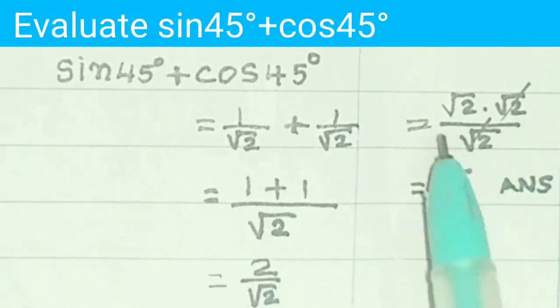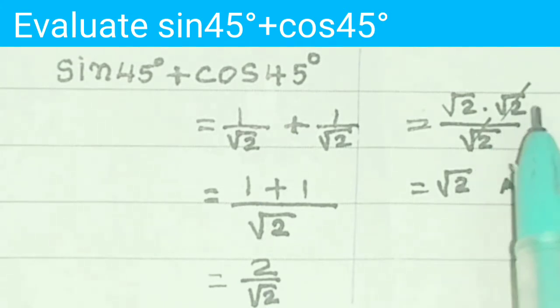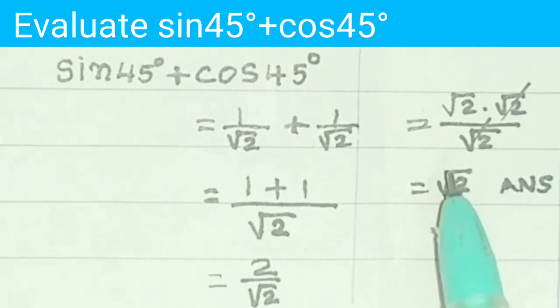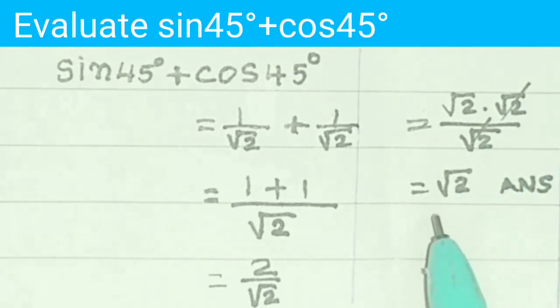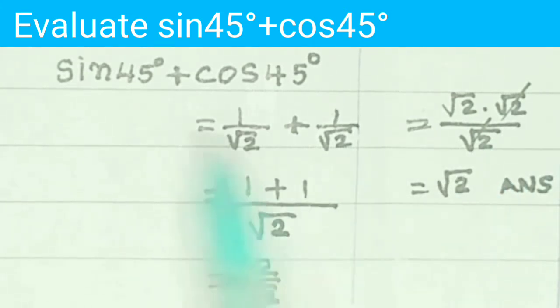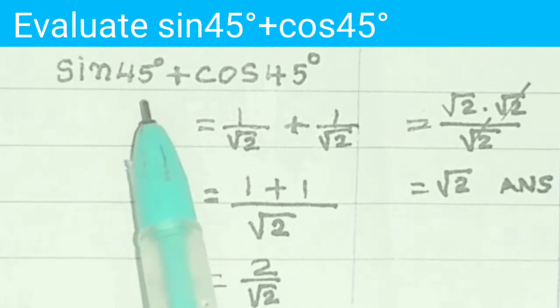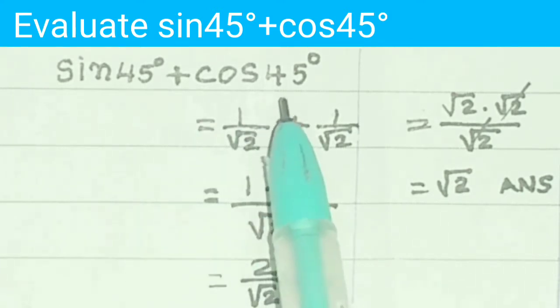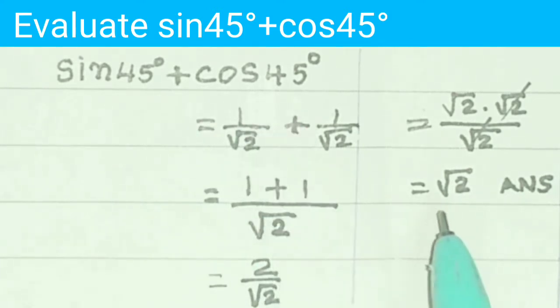Numerator 2 is written as root 2 into root 2. Root 2 and root 2 cancel, we get root 2. Therefore sin 45 degrees plus cos 45 degrees is equal to root 2.